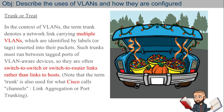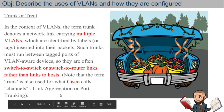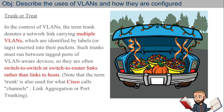For our last slide: in the context of VLANs, the term 'trunk' denotes a network link carrying multiple VLANs, which are identified by labels or tags inserted into their packets. Such trunks must run between tagged ports of VLAN-aware devices, so they are often switch-to-switch or switch-to-router links rather than links to hosts. We have Packet Tracer in the classroom, so we should spend some time creating our own VLANs. Think of a trunk as a cable carrying multiple networks — and you can label that cable in Packet Tracer.